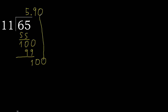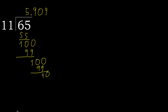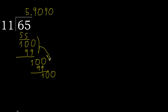Ok, complete. Complete with 0. Ok — 100. 11 multiplied by 9. Subtract — complete. Complete: 10 is less, therefore complete 2 numbers. Ok, complete with 0. Ok, complete with 0 — ok, equal.